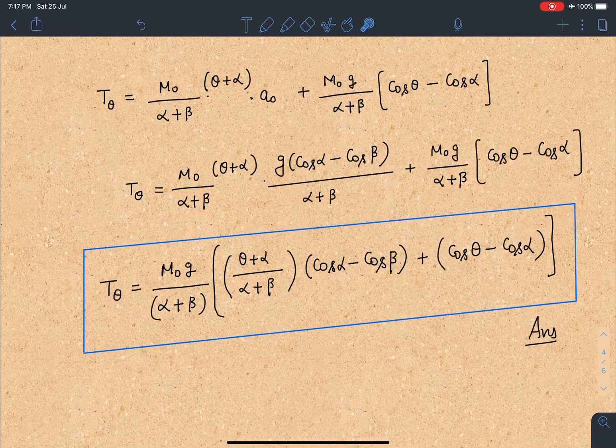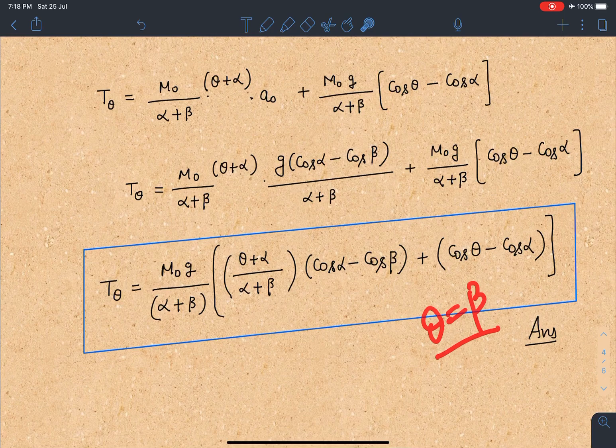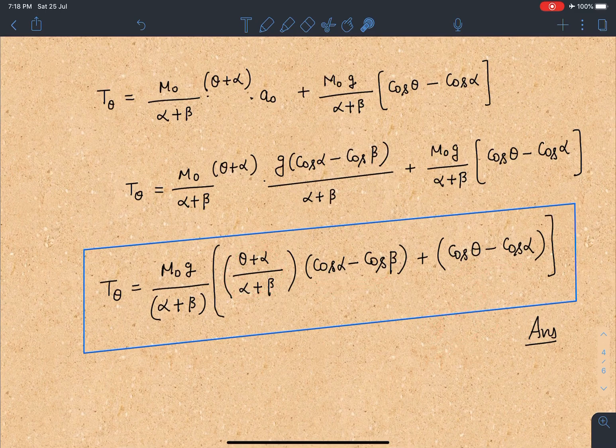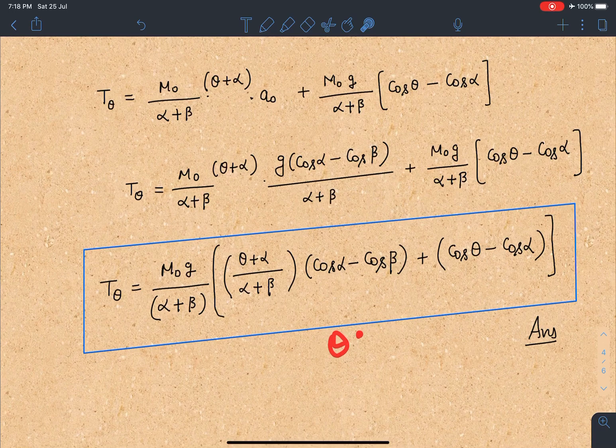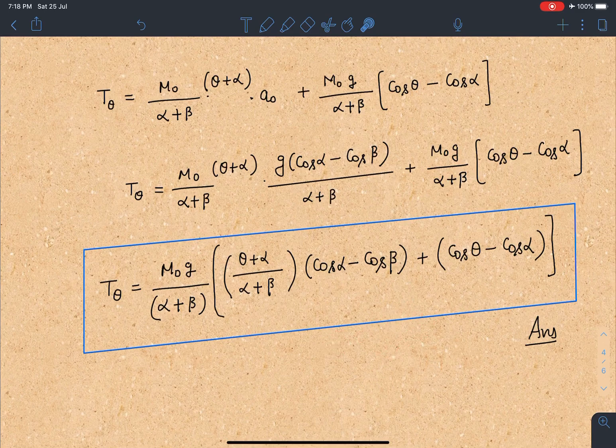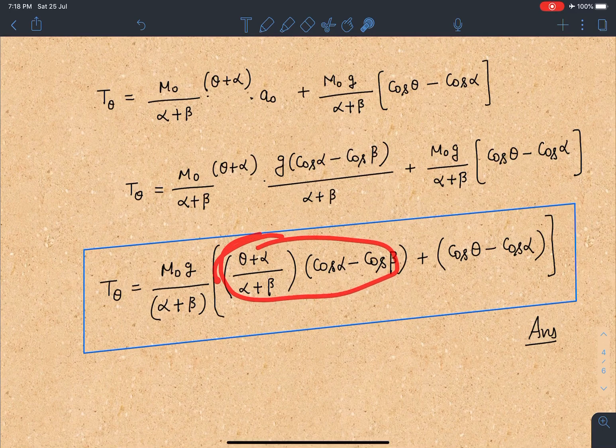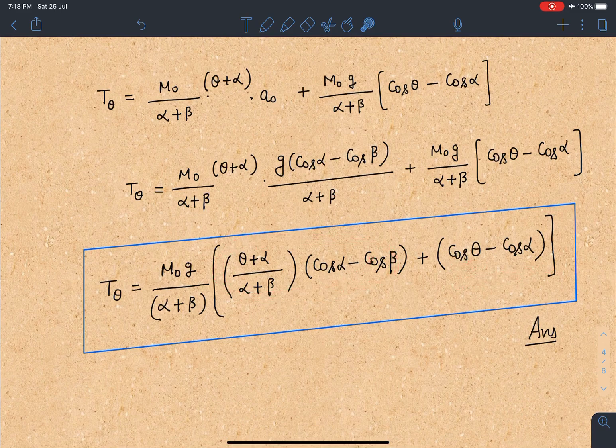And in this function if you substitute theta equal to beta tension should be zero. Let's check this will become cos beta minus cos alpha. This will become one and this will become cos alpha minus cos beta. We will get cancelled this is zero so we are right. Another part let's check alpha, theta is equal to minus alpha also if we are going to substitute here it should give us zero. So this term is going to give zero to us and theta is minus alpha. So this term also will give zero. So our answer is right here. This is the answer for the second part.